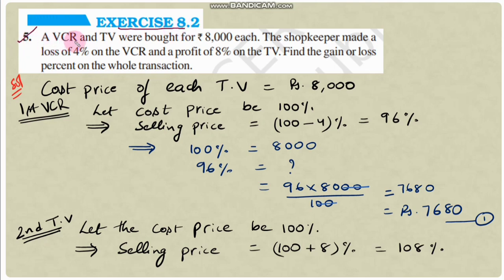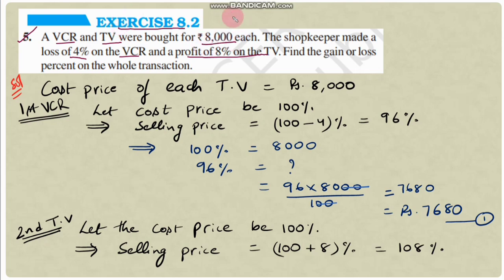Question number 5: A VCR and TV were bought for 8000 rupees each. The shopkeeper made a loss of 4% on the VCR and a profit of 8% on the TV. Find the gain or loss percent on the whole transaction. The shopkeeper purchased two items — a VCR and a TV — each for 8000 rupees. So VCR cost = 8000, TV cost = 8000.